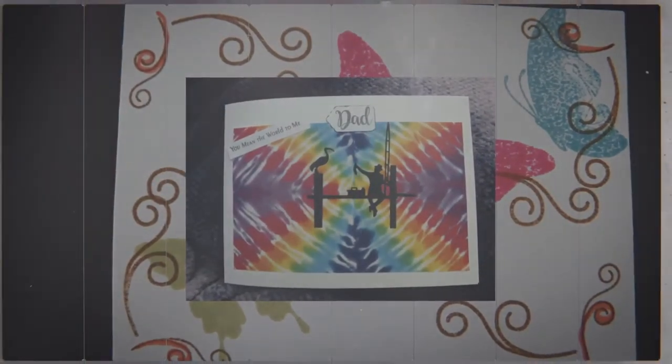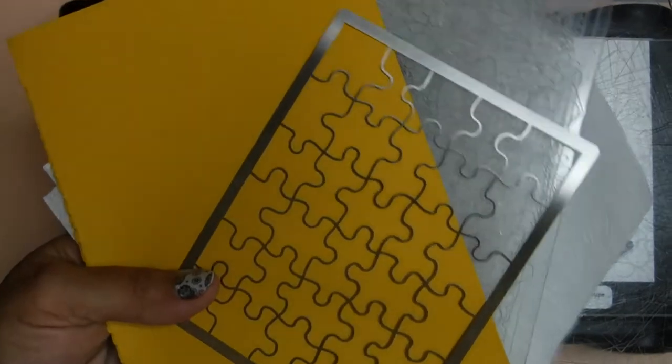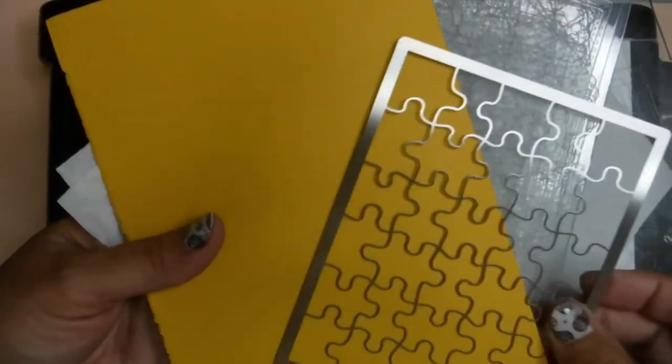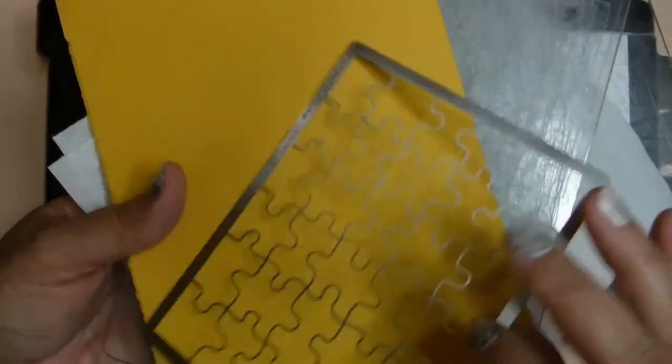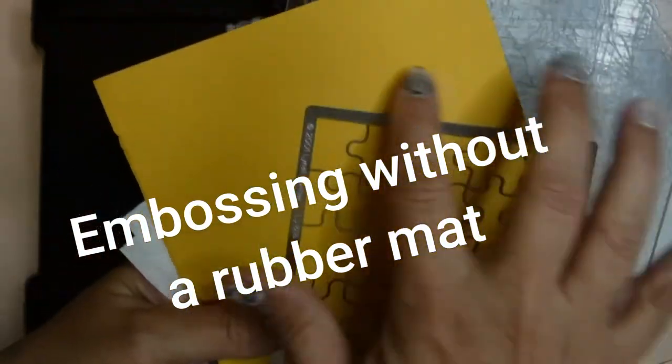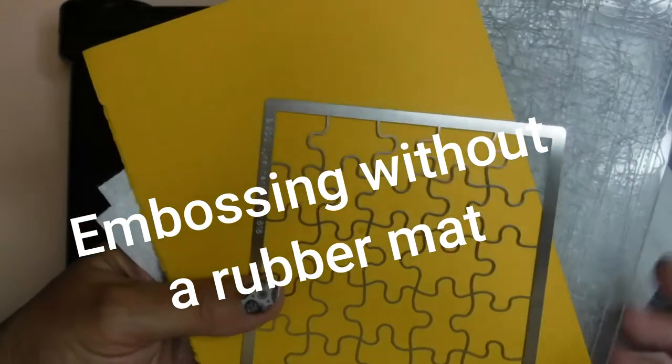Please join me here for this quick video. I'm going to show you how to emboss your paper if you have a metal stencil and you would like to create an impression on your paper. Let's say you don't have a silicone mat that you can use, but you do have your embossing machine, your die-cut machine, your Sizzix machine, anything like that.